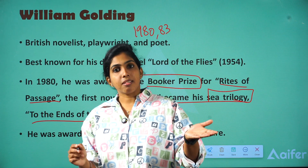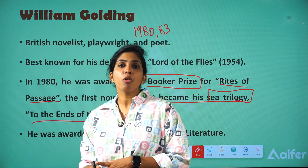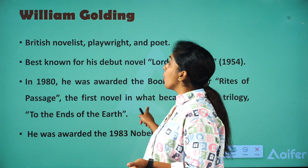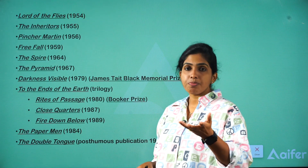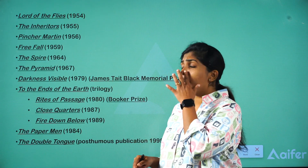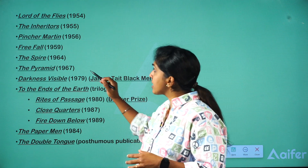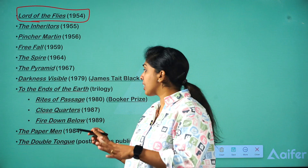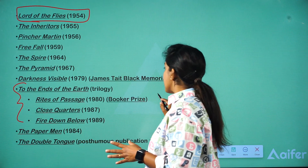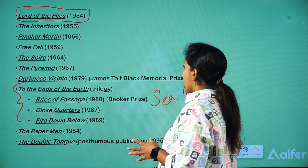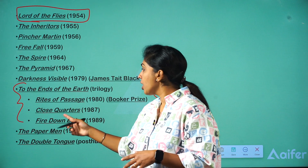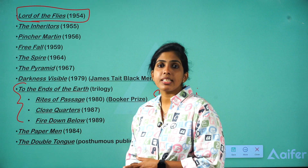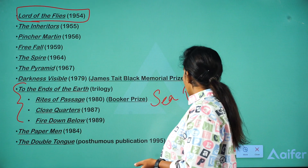Questions come from both the Nobel Prize and the Booker Prize regarding authors. William Golding is a famous post-modern novelist and playwright. His major works include Pincher Martin, The Spire, and The Pyramid. The most important category is the sea trilogy, To the Ends of the Earth, comprising Rites of Passage, Close Quarters, and Fire Down Below.